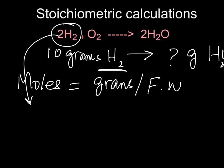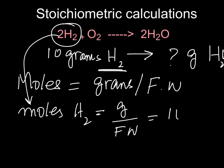So moles of H2 will be equal to grams over formula weight, which will be equal to how many grams? So we have 10 grams, and divided by the formula weight, and the formula weight of H2 is 2 times 1, which is the mass of hydrogen.